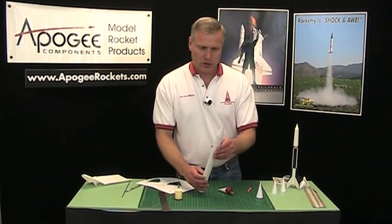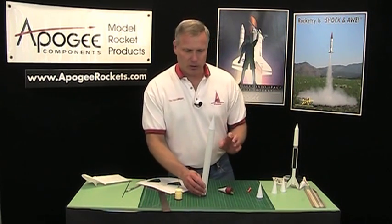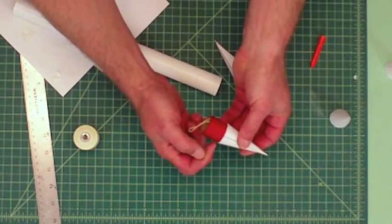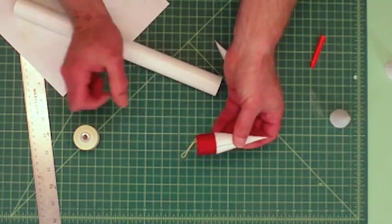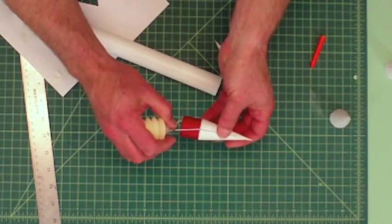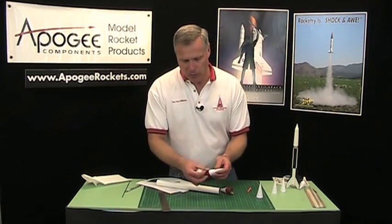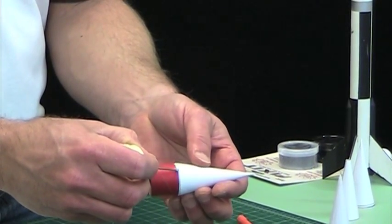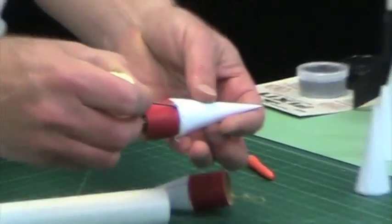And that's pretty much it. Now there is a little gap underneath where the paper edge comes over and you can fill that with glue if you want, you can leave it empty. I like to fill them, just fill it with glue and then wipe off the excess and that will give you a nice tight shoulder there.